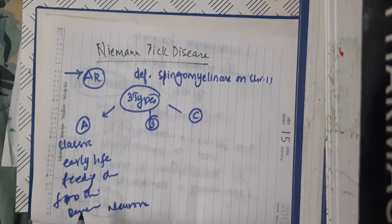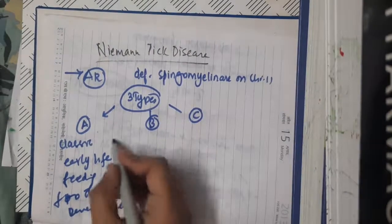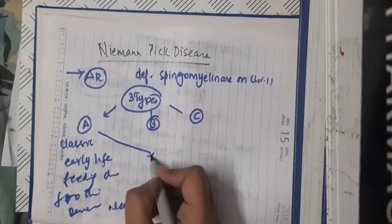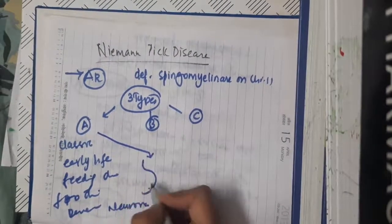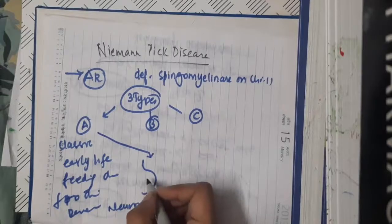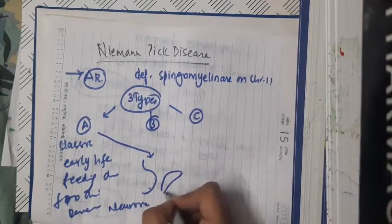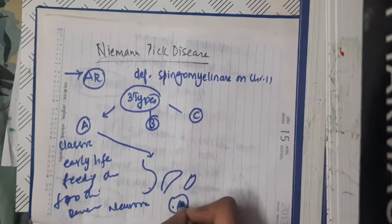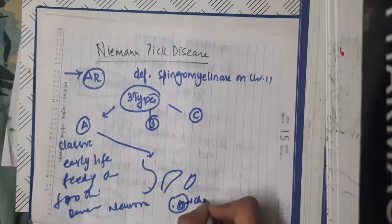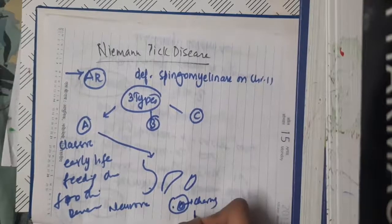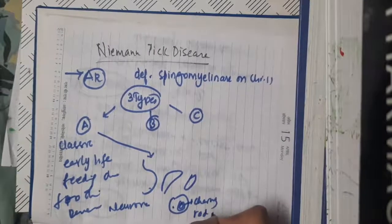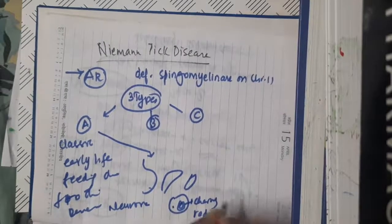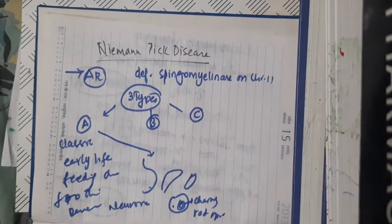In type A, you will see presence of a proberant abdomen, hepatosplenomegaly, and on examination you will see presence of a cherry red spot in type A Niemann-Pick disease.